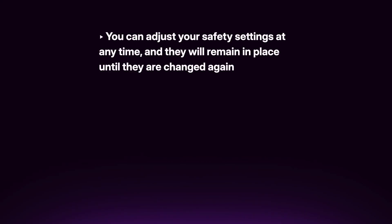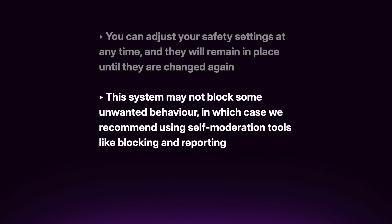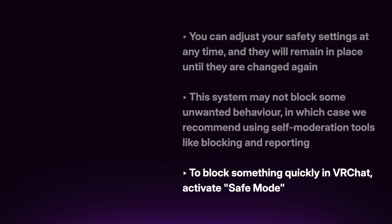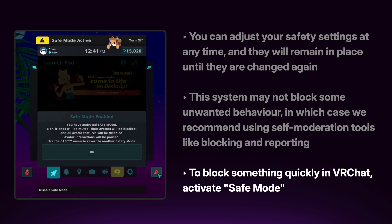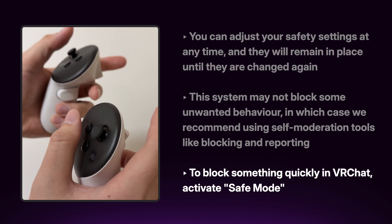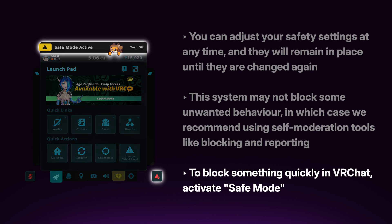Some important tips to keep in mind about the trust and safety system: you can adjust your safety settings at any time, and they will remain in place until they are changed again. This system may not block some unwanted behavior, in which case we recommend using self-moderation tools like blocking and reporting. To block something quickly in VRChat, activate Safe Mode by pressing Shift and Escape on desktop, clicking the Safe Mode button in the quick menu, or pulling both triggers and pressing both system menu buttons on your VR controllers at the same time. Remember, Safe Mode will temporarily override your safety settings until deactivated.